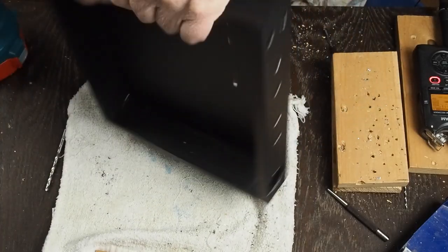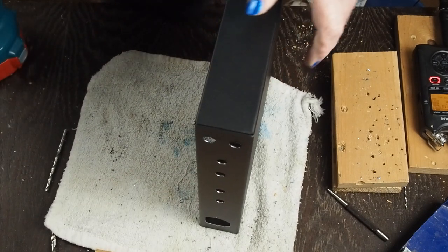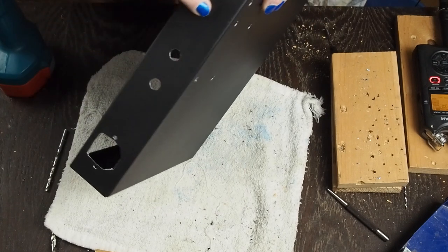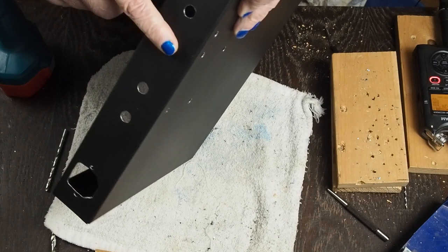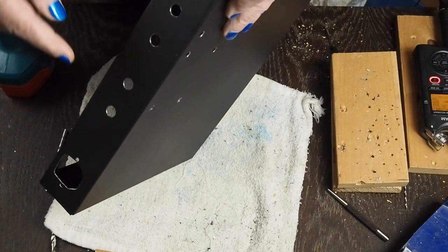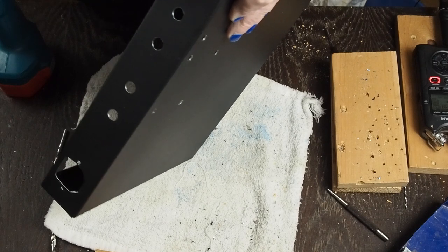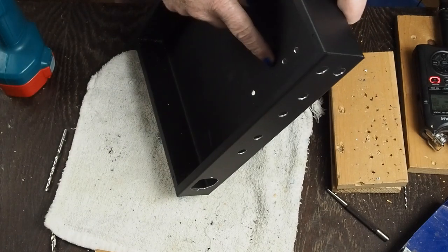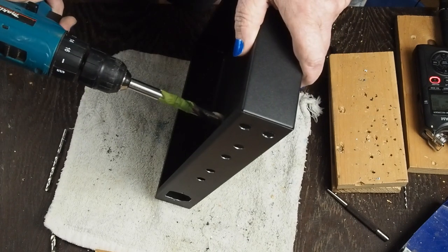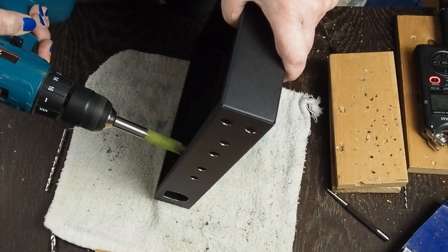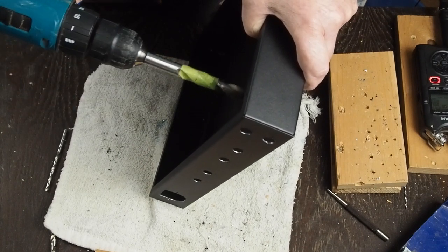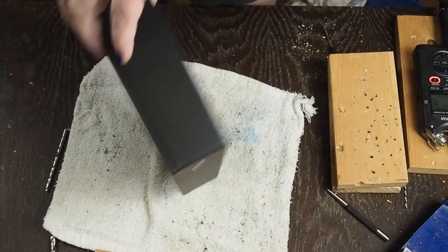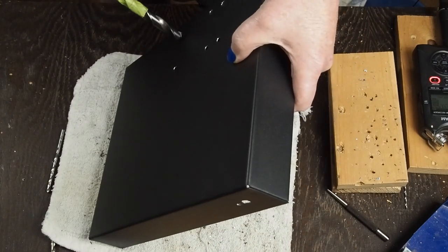Now the last thing we have to do is deburr our holes. I know you've seen me using the deburring bit with my fingers, and I do recommend doing it by hand for holes this size because it's real easy for this bit to dig in and get a bite and booger up a hole worse than it's helping. But on these smaller size holes like we drilled, it's perfectly fine to just come back with the drill and deburr them like that.